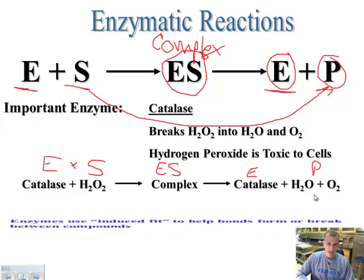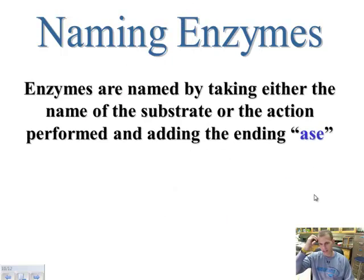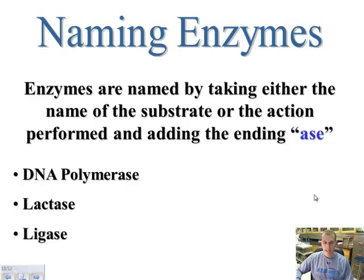So the enzymes use an induced fit to help bonds form or break between the compounds, and the enzyme is helping the reaction occur fast enough for what we need in our body. We've talked about the naming of these enzymes many times in class — DNA polymerase, RNA polymerase, helicase. Enzymes are named by taking either the name of the substrate or the action performed, then adding the -ase ending at the end. For example, DNA polymerase acts on DNA and the long polynucleotide chain. Lactase and ligase are other examples. The main thing to notice is that enzymes always end in the -ase ending, and that tells you it's an enzyme.